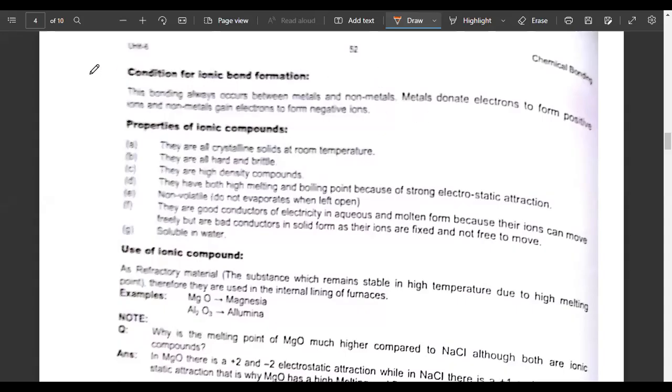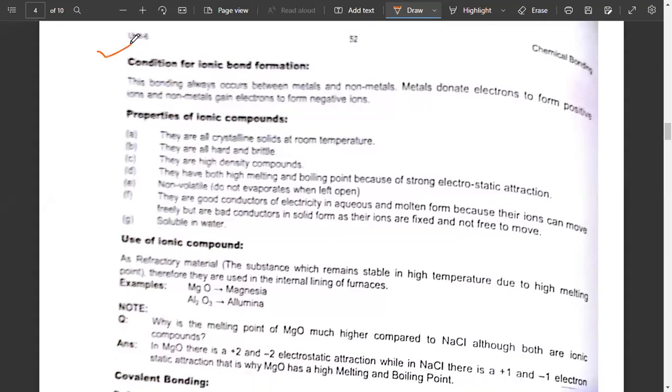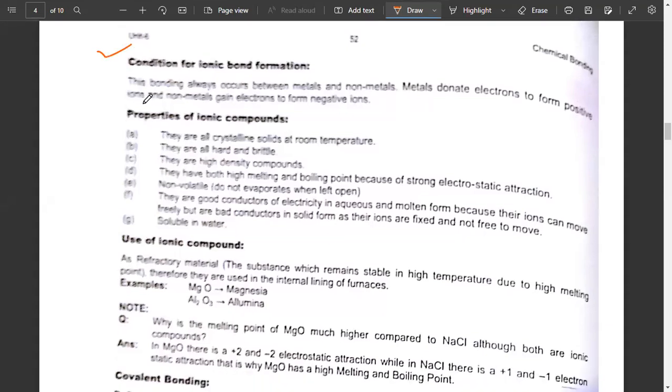Now further, when we talk about ionic bonding, we have some conditions for ionic bond formation as well. This bonding always occurs between metals and non-metals. The rule is that metals donate electrons to form positive ions and non-metals gain electrons to form negative ions.